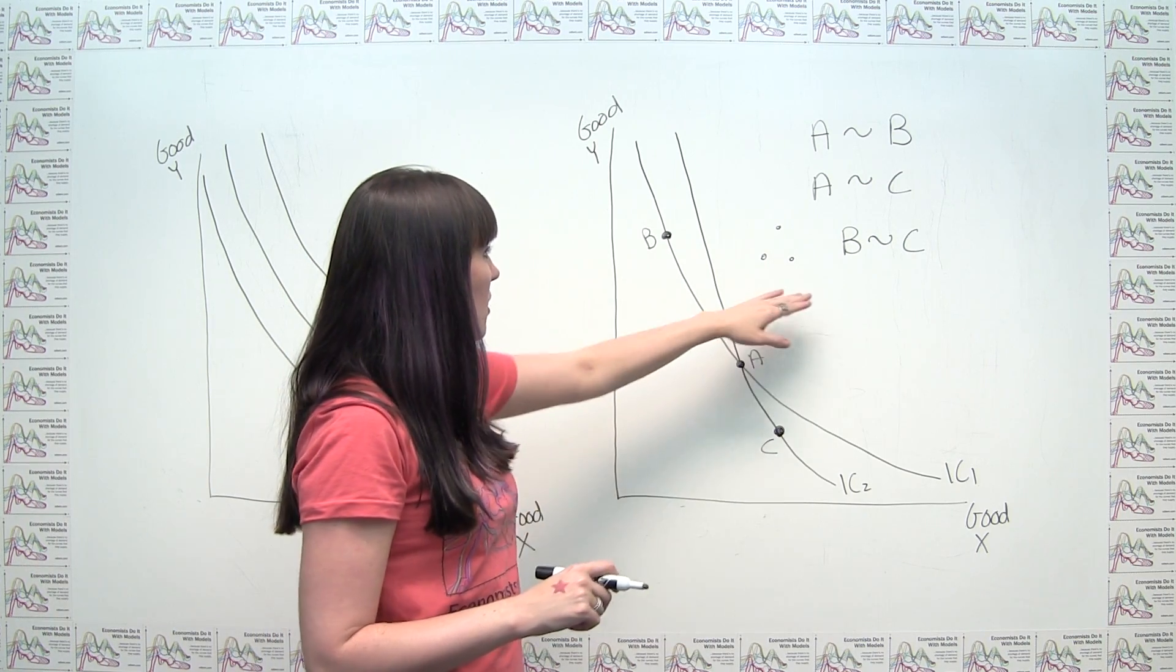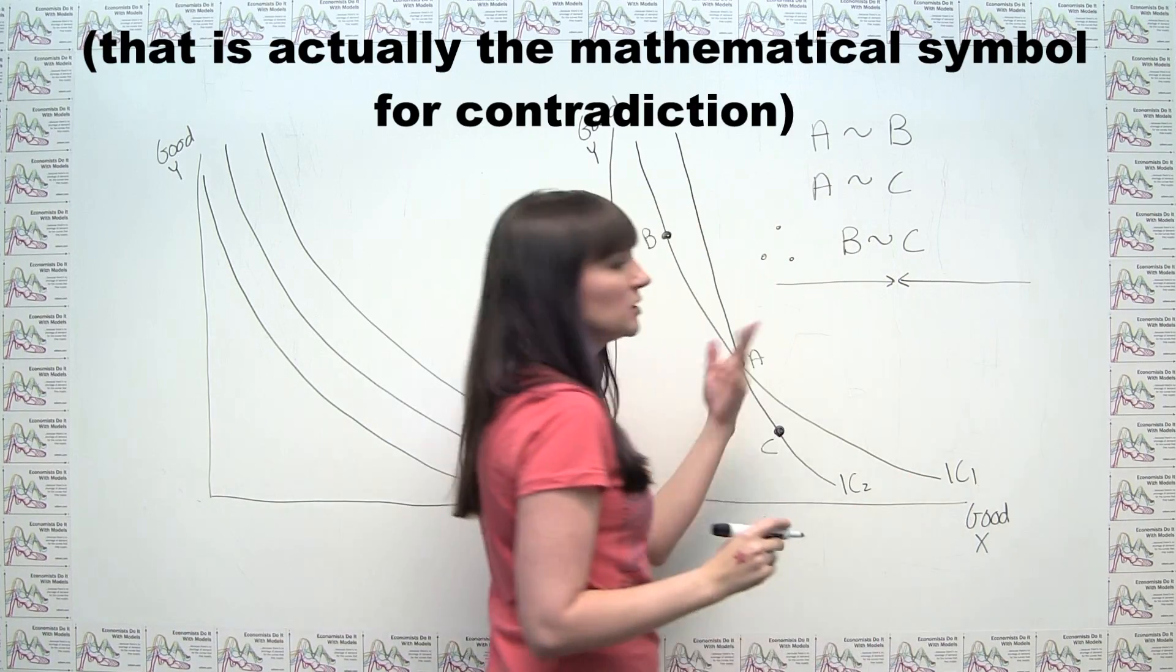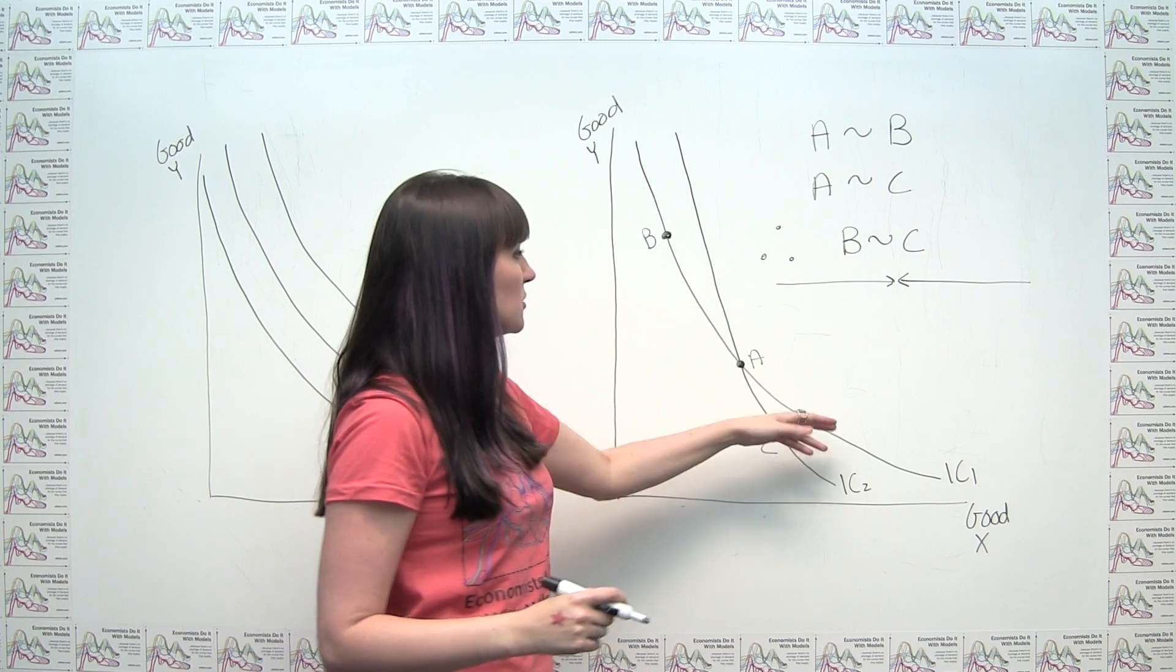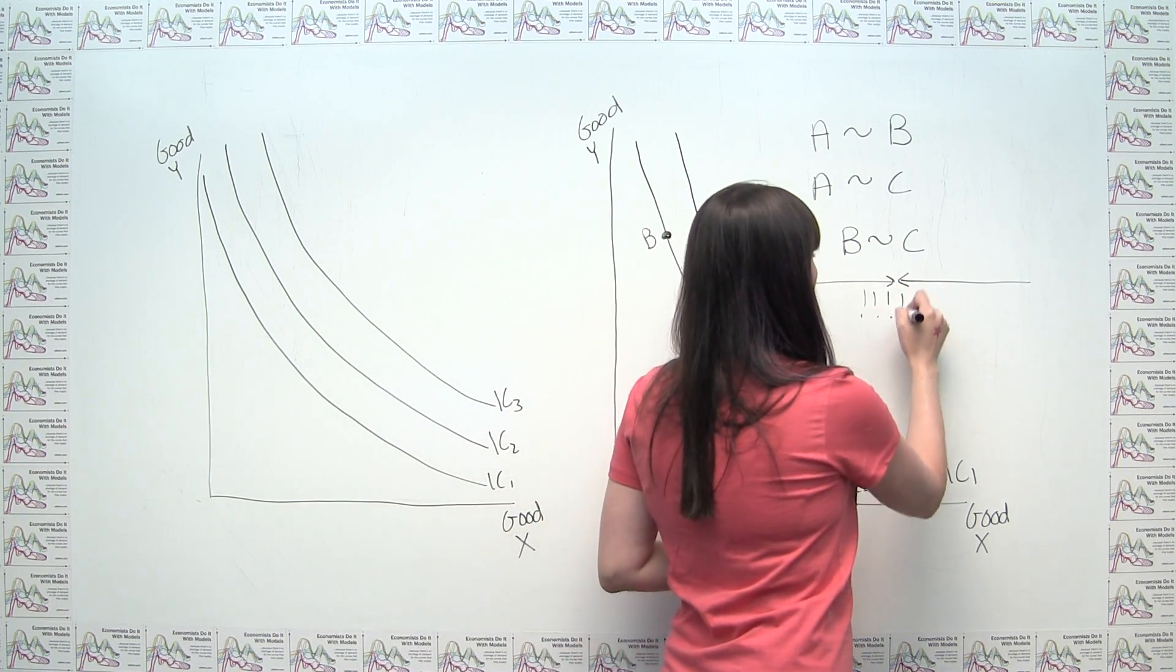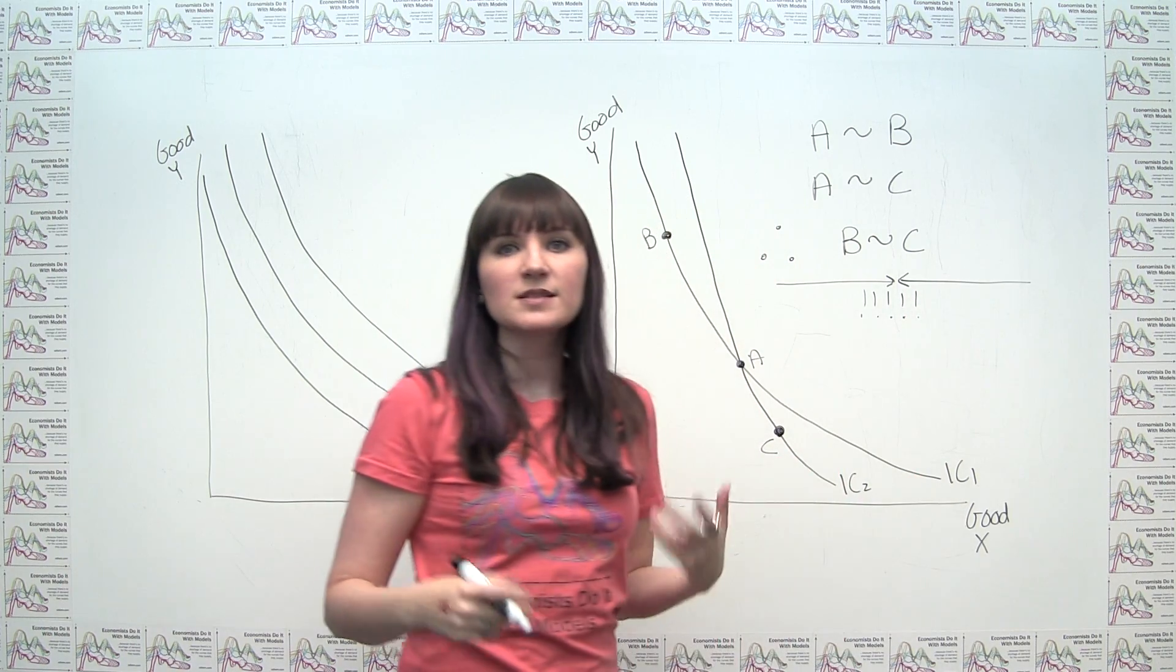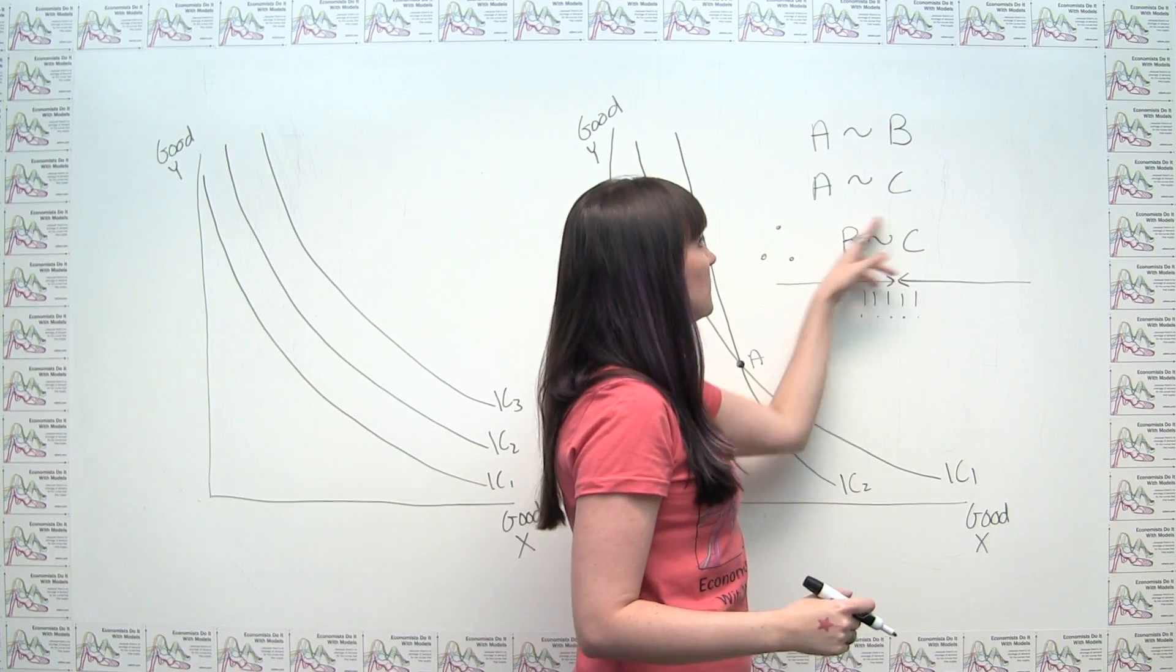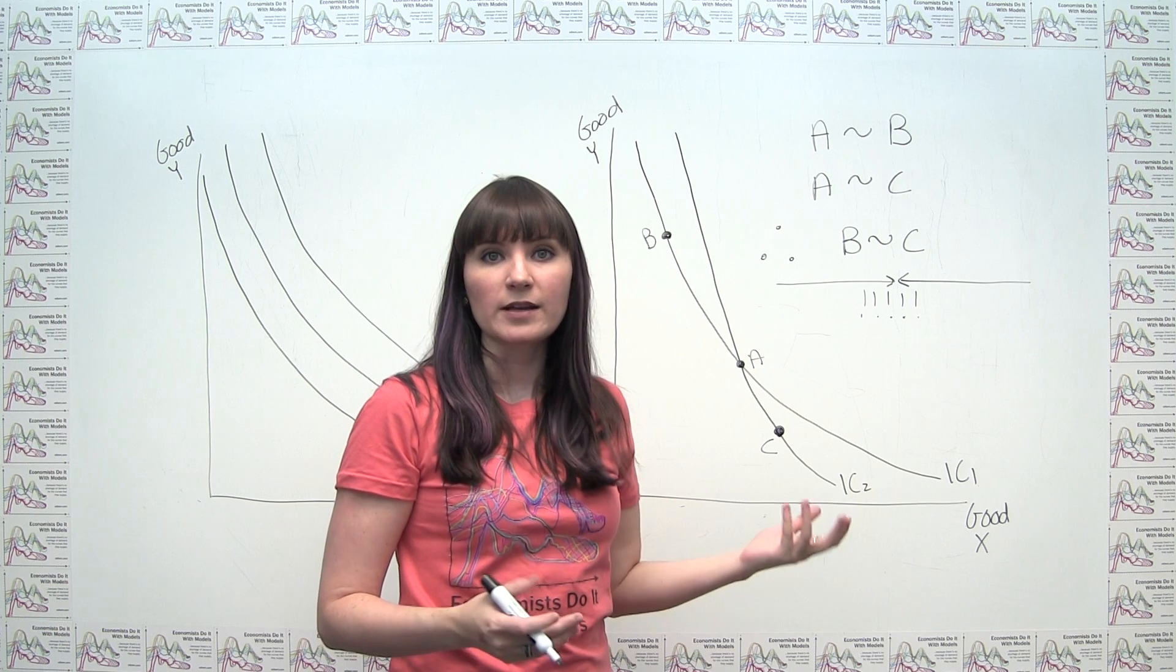So wait a minute, all of a sudden we get a contradiction with our fundamental definition of indifference curves. So as soon as we have indifference curves crossing, we get a nonsensical conclusion. So in order to be consistent with our definition of rationality and our transitivity of indifference, it must be the case that indifference curves don't in fact cross.